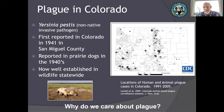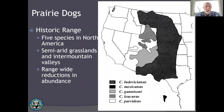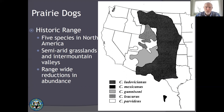So as a wildlife management agency, why are we worried about plague — a disease most associated with humans? Colorado is right in the bullseye of prairie dog range. We have black-tailed prairie dogs, white-tailed prairie dogs, and Gunnison prairie dogs that pretty much cover the state of Colorado. All of these species are experiencing range-wide reductions in abundance, which creates lots of wildlife management problems for us.